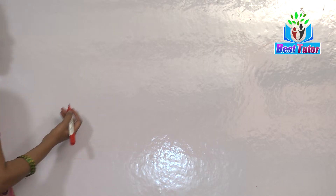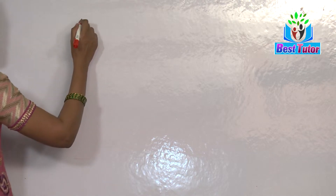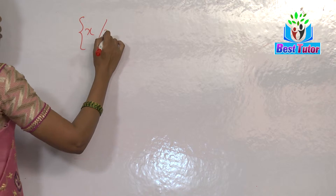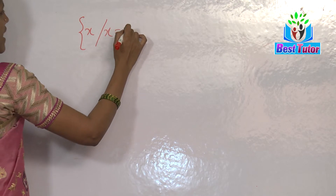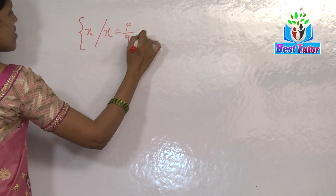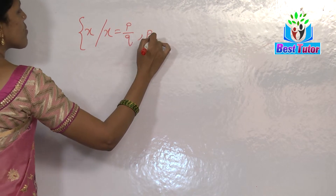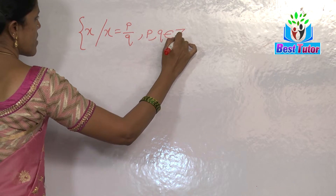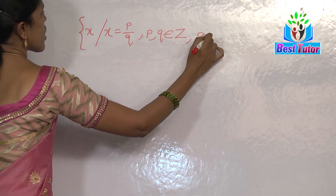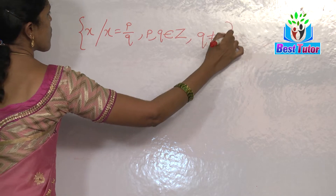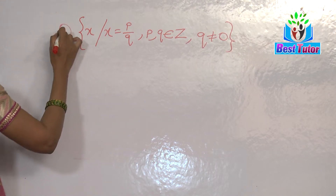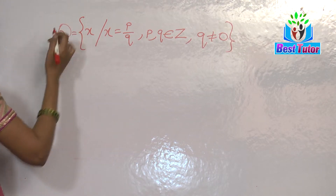In the previous class we have already learnt that rational numbers are fractions. They can be written in the form of a fraction where both the numerator and denominator should be integers, and the denominator can never be equal to zero. So this is the set of rational numbers.